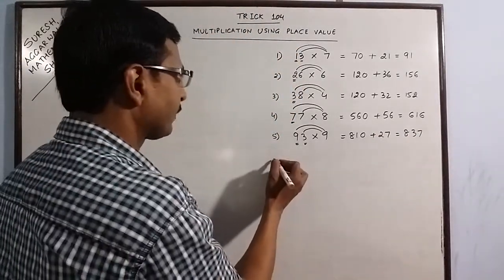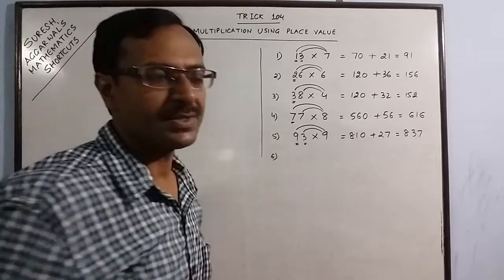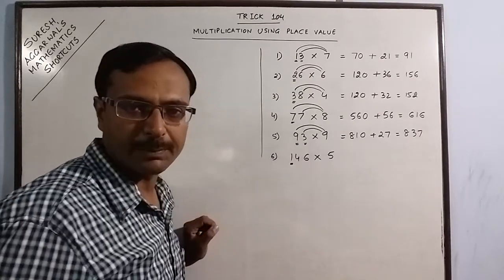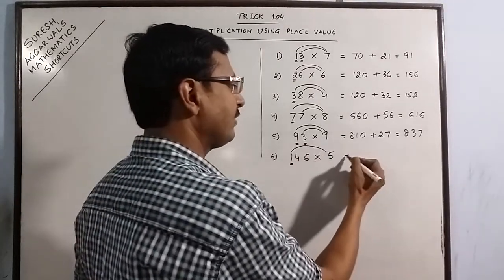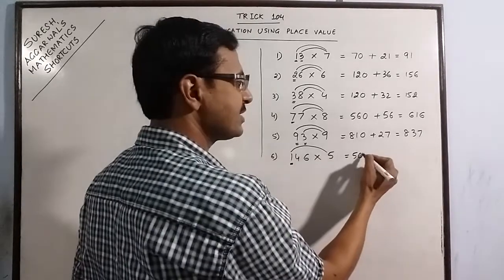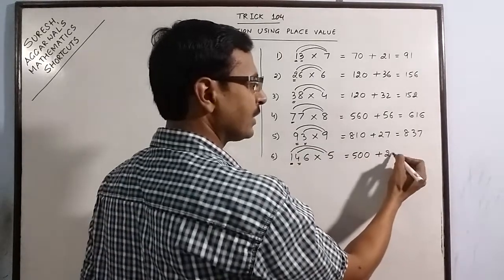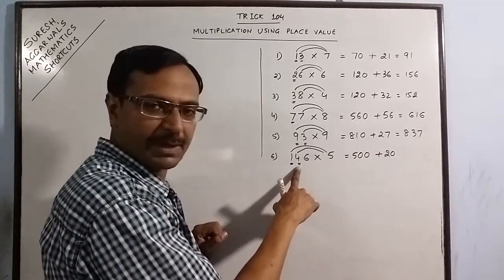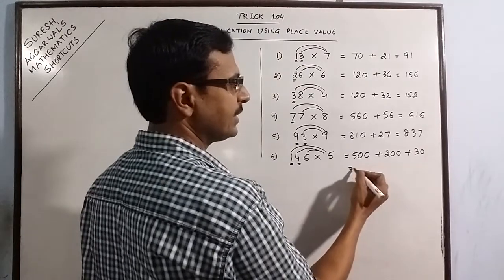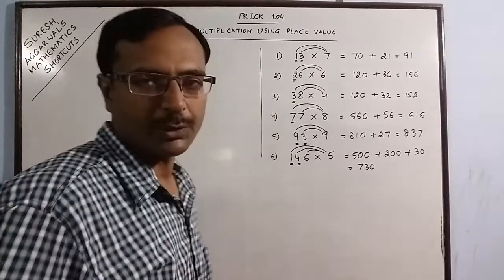Similarly, you can take 3 digit numbers now. Say we have 146 multiplied by 5. You have this 1 in the 100 place. So when you multiply 1 by 5, you get 5. Since you have multiplied a digit which was in the 100 place, put 2 zeros before this. Now move on to the 10th place. 4 into 5 is 20. You are multiplying a digit which is in the 10th place, so put 1 zero and 6 into 5 is 30. Just add the 3 numbers, 500, 730. So 730 is the product of 146 and 5.